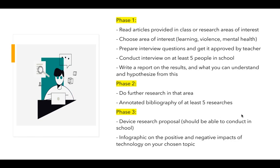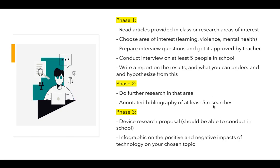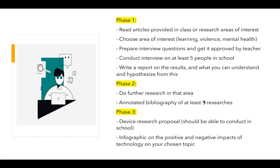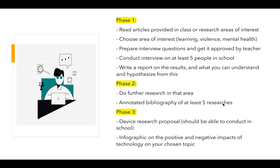Based on that further research, you will do an annotated bibliography of at least five studies. I will explain what an annotated bibliography is in more detail as we near that part of the project, but it basically involves reviewing five different research studies — for example, on the positive effects of digital technology — and summarizing and evaluating each one.